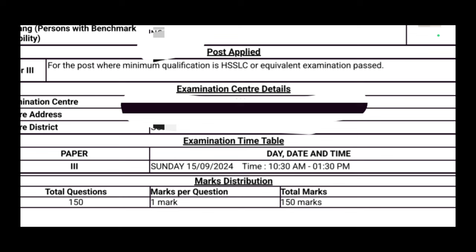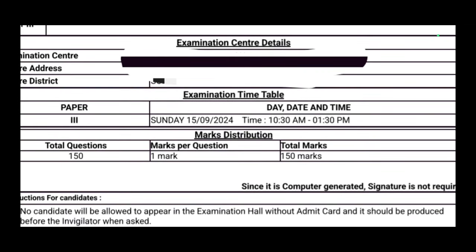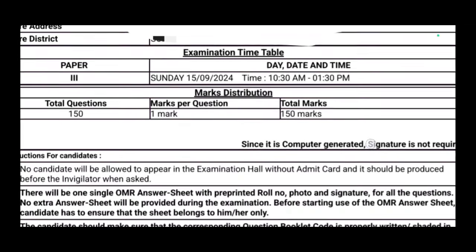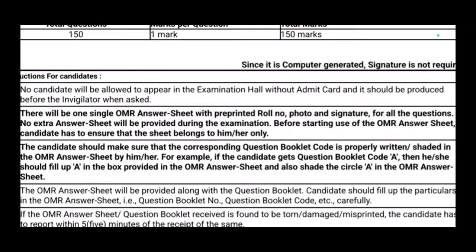You have to go to the exam center around 9:30, because there is a huge number of applicants and a lot of traffic. There is negative marking of 0.25, which is a very important instruction. You need to bring an OMR sheet, a photo identity card such as a driving license or voter ID.